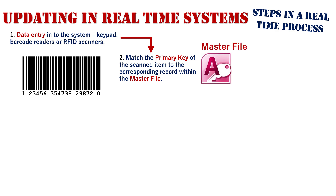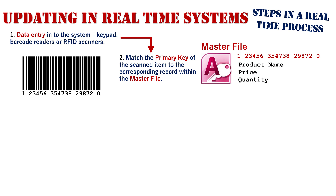The next step is to match the primary key of the scanned item with a corresponding record stored on the master file, which would be stored on the system server. That primary key goes in — that number — and then it recalls other characteristics and attributes about that product: the product name, its price, its quantity.